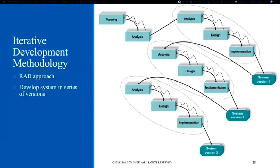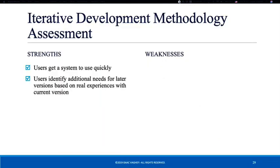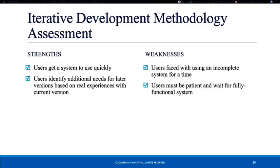In iterative development, systems are created very quickly through versions. We do planning, analysis, and then create a version, receive user feedback, create another version, receive more feedback, and the final system is built through these versions. The strength is that users get to see the system very quickly and identify their needs through versions, but end users have to be patient because the first few versions may not be fully functional and may have bugs or crashes.